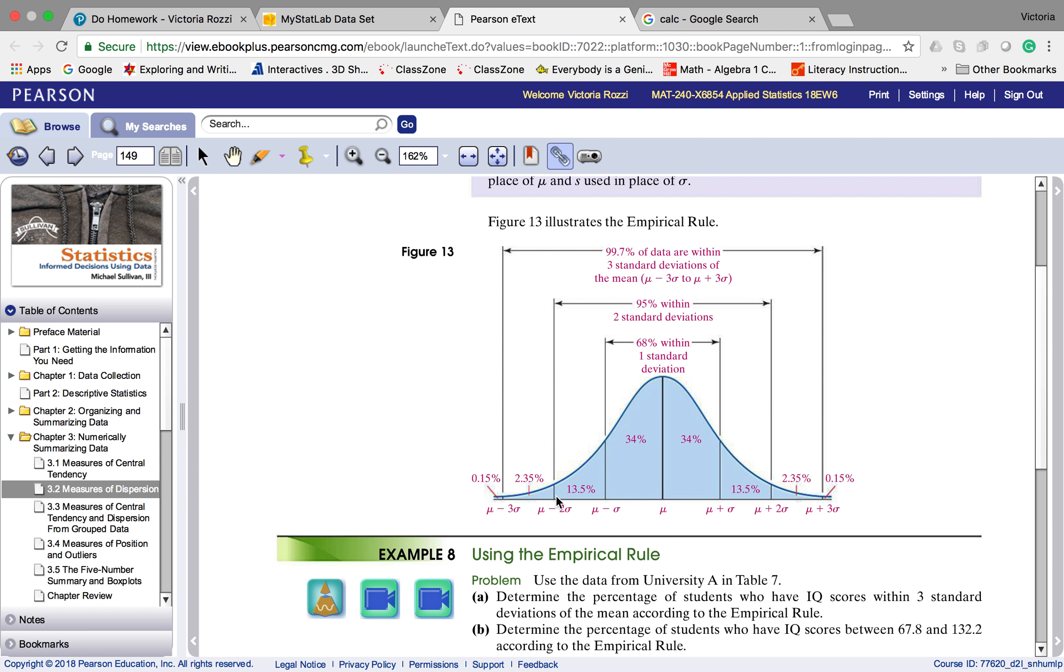Now, what's kind of nice is they're both two standard deviations. So if you look up here, we have within two standard deviations of the mean is 95%. They've actually added up for us. But if you wanted to add it up, you'd use 13.5 plus 34 plus 34 plus 13.5.